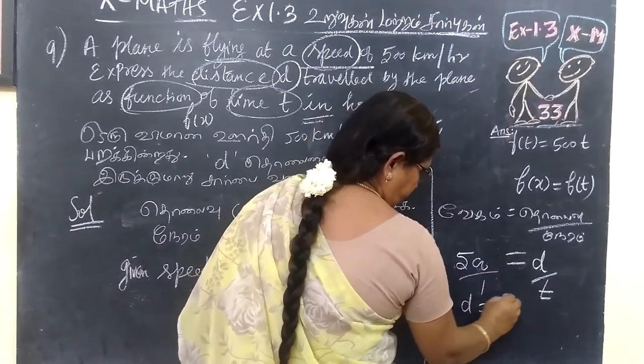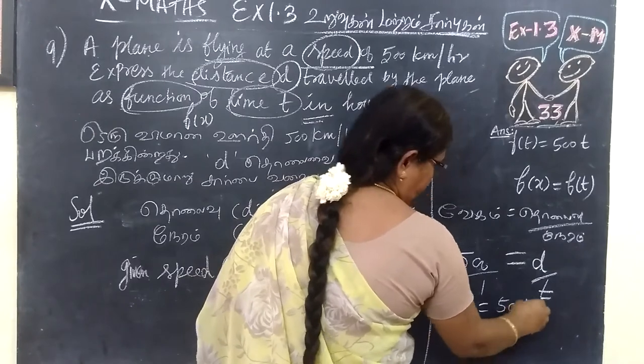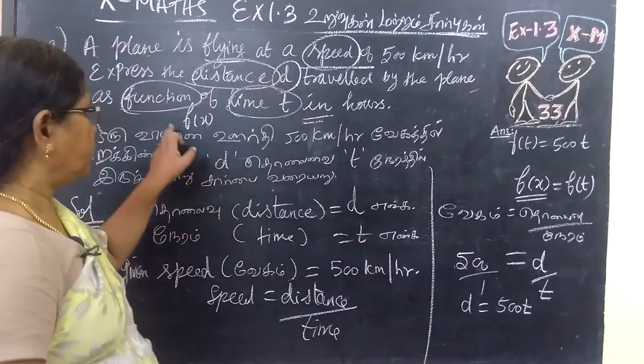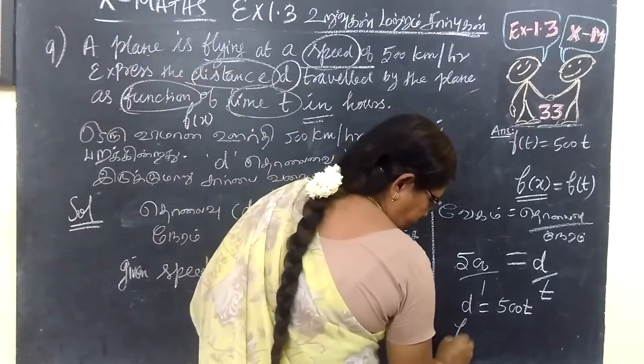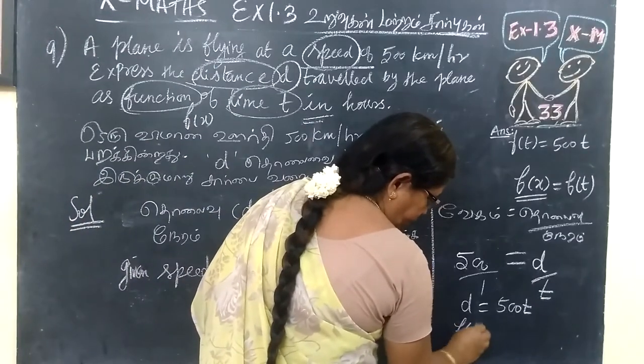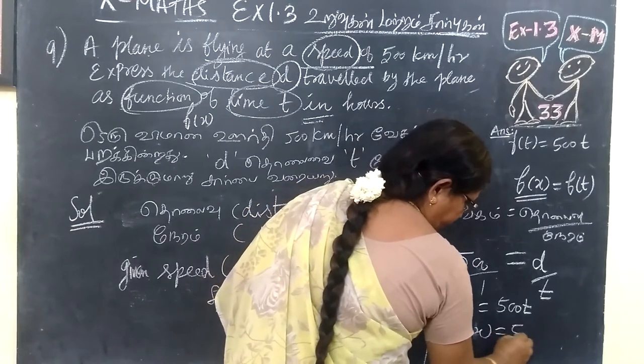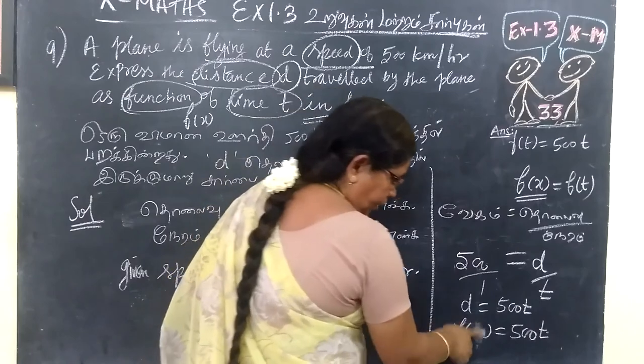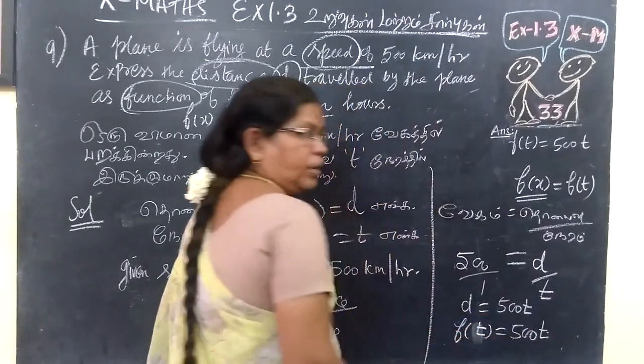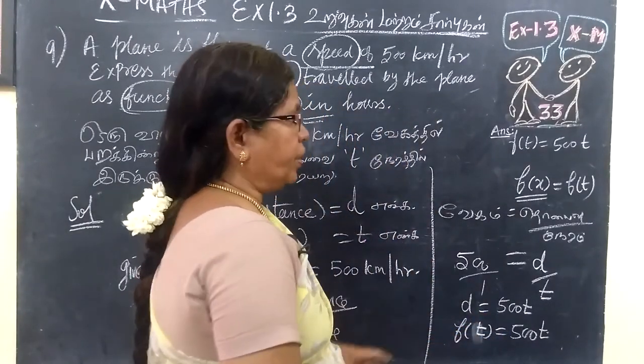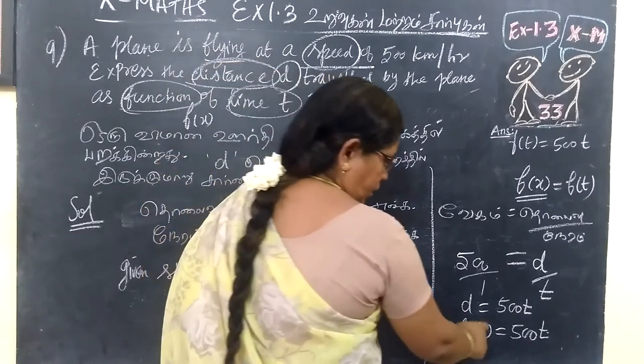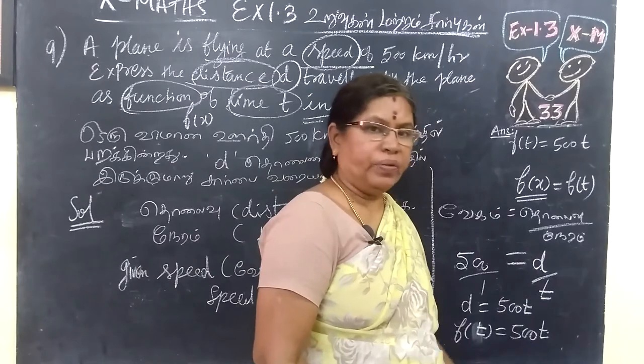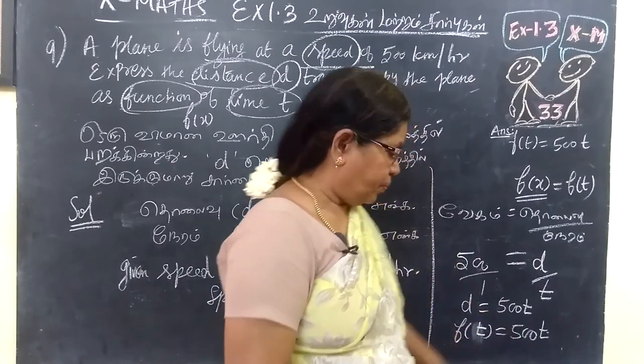d equal to 500t, but here we call the function. Function f of x, x will be equal to t. Variable is equal to t, so here we call the x in the same way to t. So for different value of t we get different answers, f of 1, f of 2.